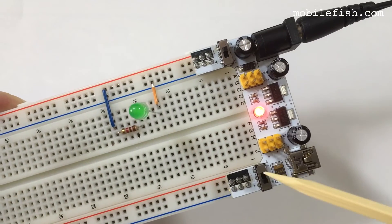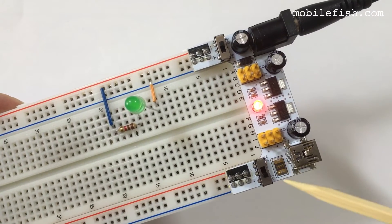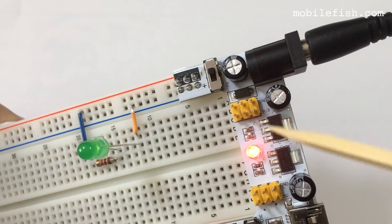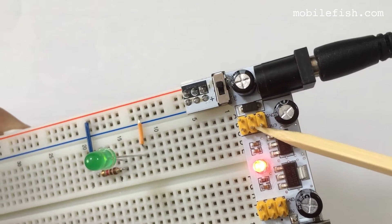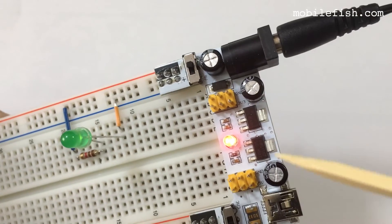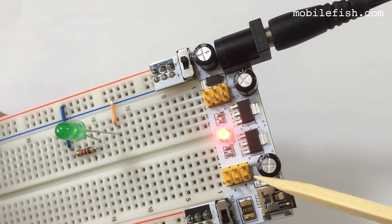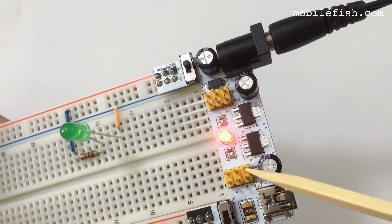But over here you can also select 3.3V or 5V. And over here are pins where you can select 3.3V and the ground, and over here you can select 5V and ground.